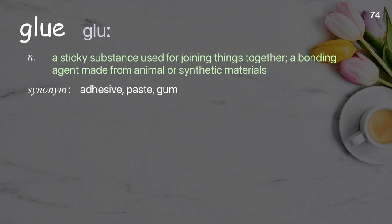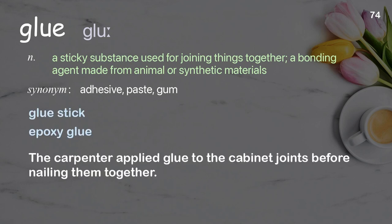Glue: a sticky substance used for joining things together; a bonding agent made from animal or synthetic materials. Examples: glue stick, epoxy glue. The carpenter applied glue to the cabinet joints before nailing them together.